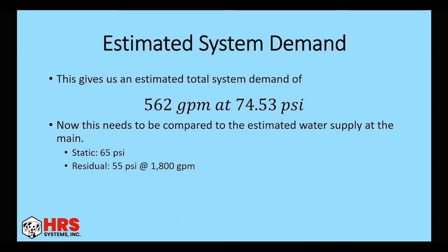So our total system demand at this point is 562 GPM at 74.53 PSI. Now, again, this is an estimate and I tried to go worst case scenario so that we could add more fittings. Pressure loss or the pressure demands might change a little bit. Our water supply might change a little bit. So we're trying to include several of those things by taking the worst case scenario.